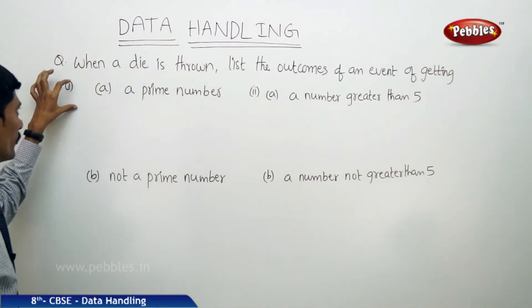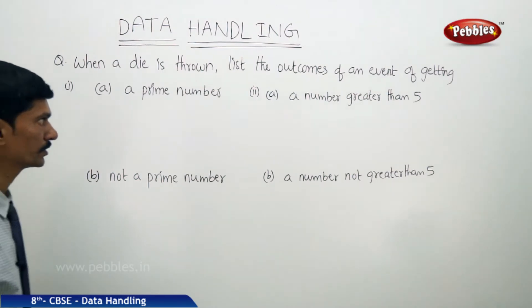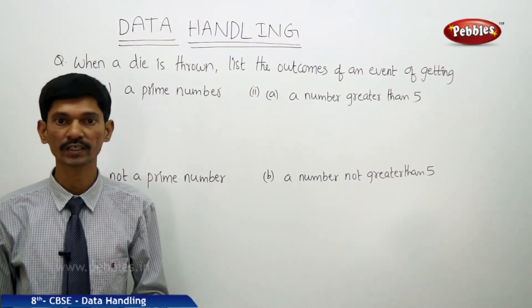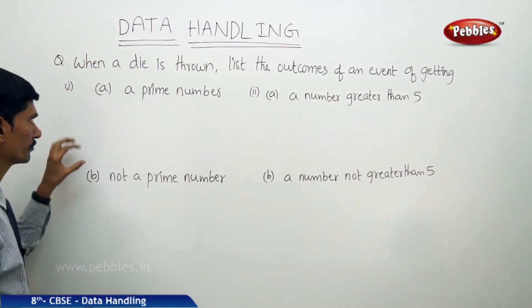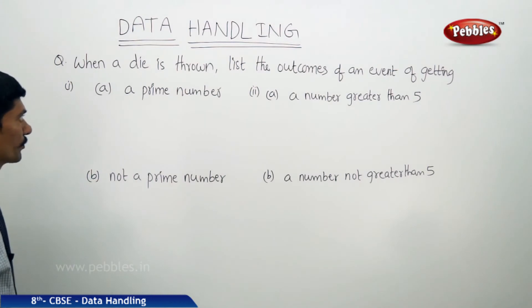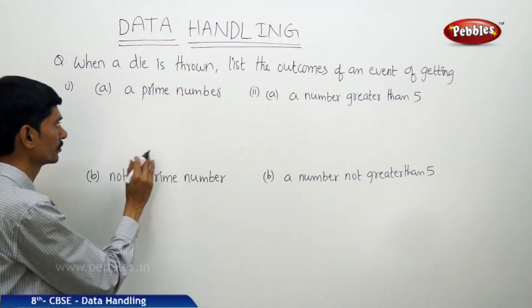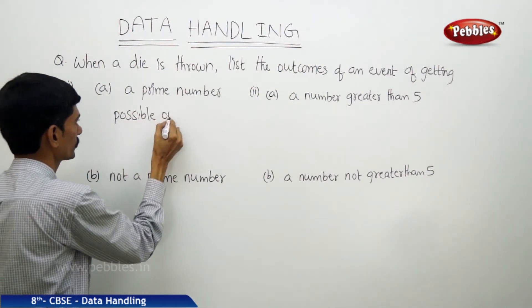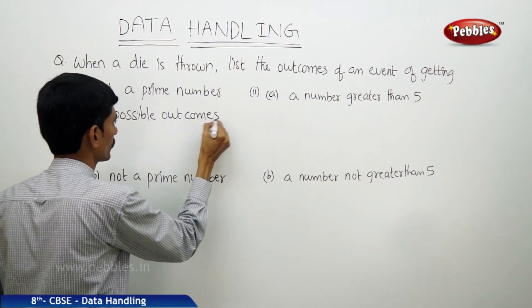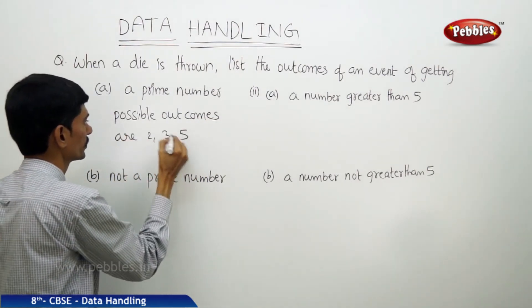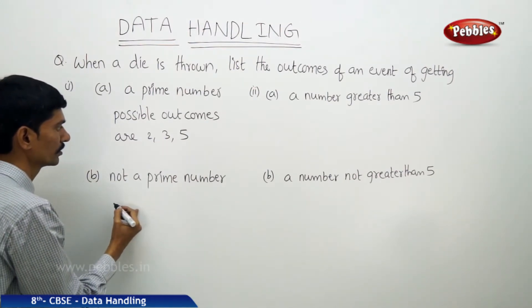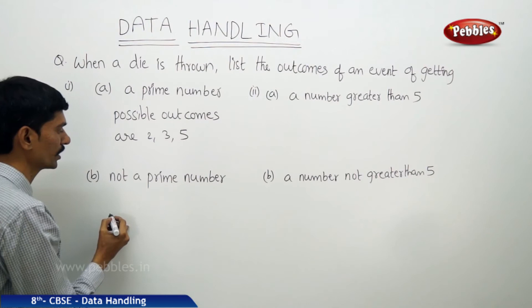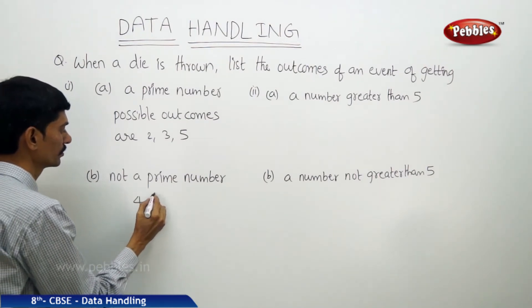Let us solve the next question. When a die is thrown, list the outcomes of an event of getting: the total possible outcomes are 1, 2, 3, 4, 5, 6. For a prime number, the prime numbers out of 1 to 6 are 2, 3, 5. So the possible outcomes are 2, 3, 5. For not a prime number — since 1 is neither prime nor composite — we take 1, 4, and 6. For a number greater than 5, the possible outcome is only 6.